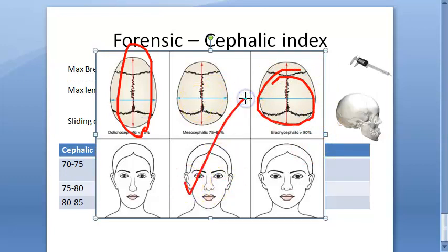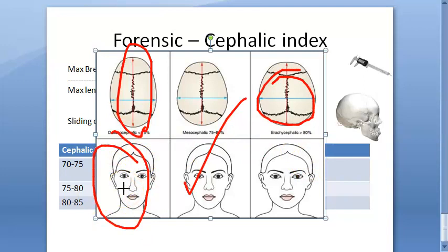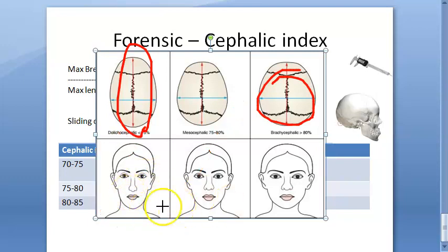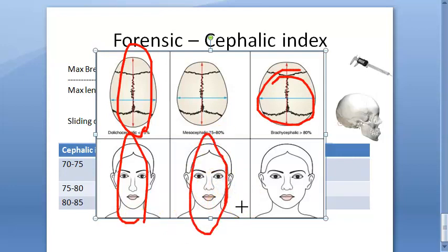Indians are actually classified as mesaticephalic — medium-headed. Indians, Chinese, and Europeans are classified here. Who will be long-headed? Long-headed will be pure Aryans and Aborigines — that's what the textbook says. Brachycephalic, or short-headed, will be Mongolians.